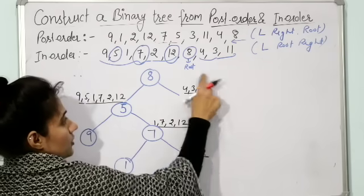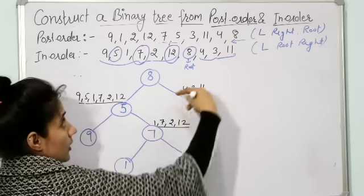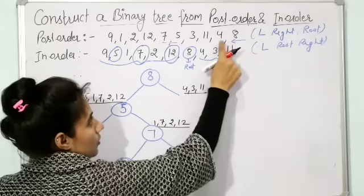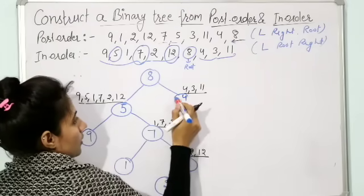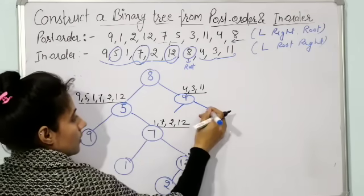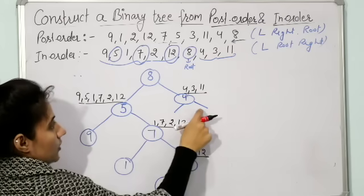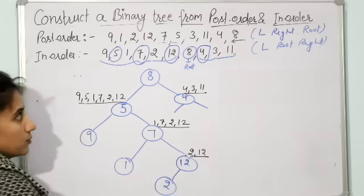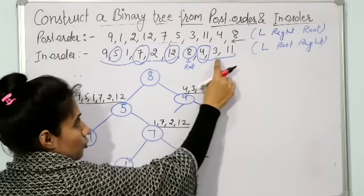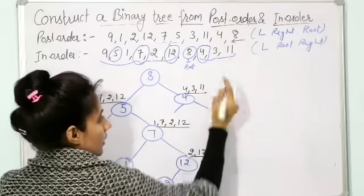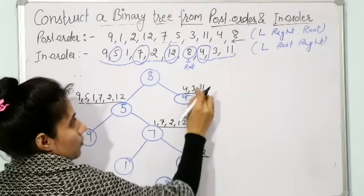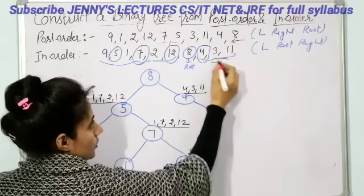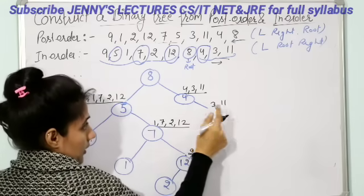Now go to the right subtree. Out of elements 4, 3, and 11, find the root by going to post-order and scanning right to left — 4 is coming first. So 4 would be the root. Locate 4 in in-order traversal: there is nothing to the left of 4, and both 3 and 11 are to the right of 4. So 3 and 11 form the right subtree of 4.